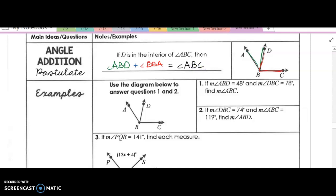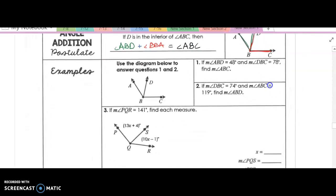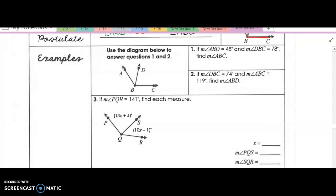Okay, so let's apply that to example three here. So we're given that the measure of angle PQR, so PQR is this guy right here, so this whole thing is equal to 141 degrees.